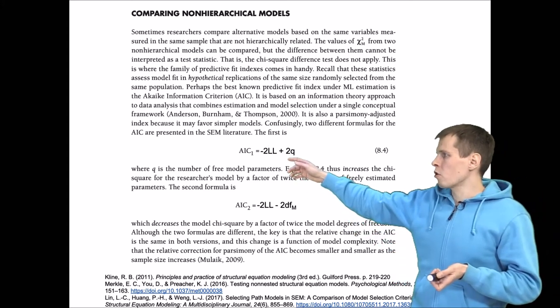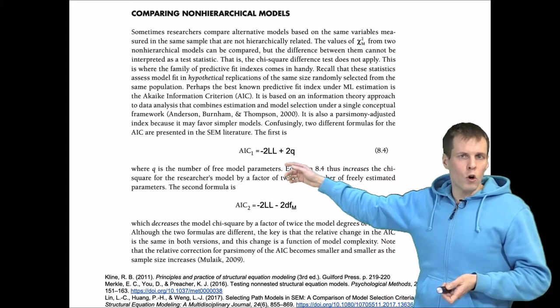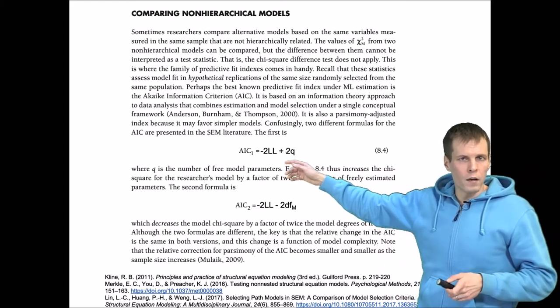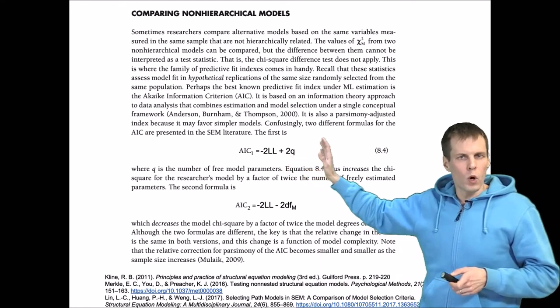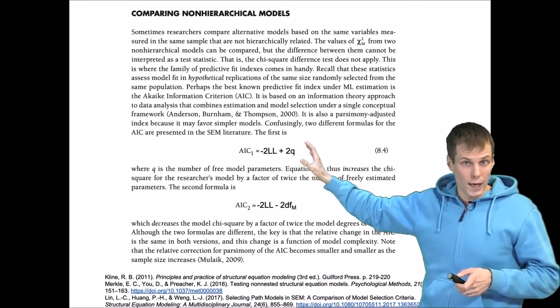The minus two log likelihood will always get smaller when we add parameters to the model. So we penalize for model complexity because comparing a simple model against a complex model wouldn't be a fair comparison.